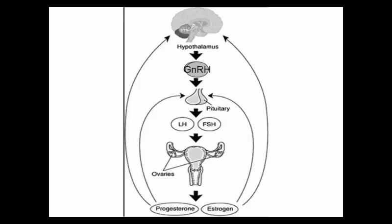The hypothalamus releases a hormone known as GnRH (gonadotropin-releasing hormone). This GnRH stimulates the pituitary gland, and the pituitary gland produces two hormones: LH and FSH. These LH and FSH hormones induce the ovary to produce the mature Graafian follicle, and simultaneously the proliferation of the endometrium takes place.